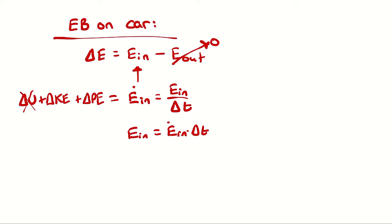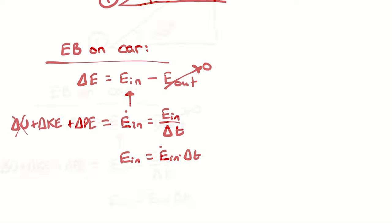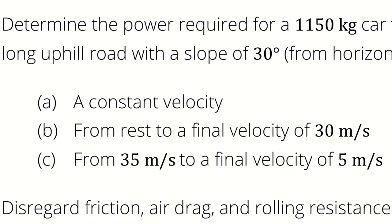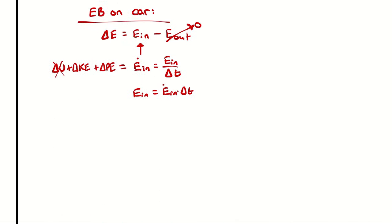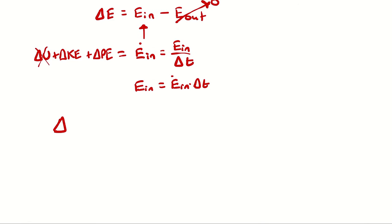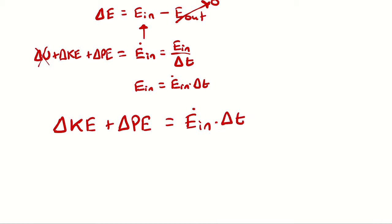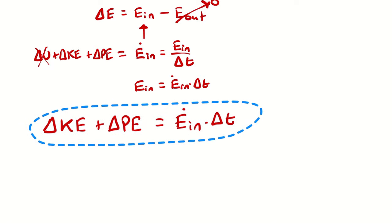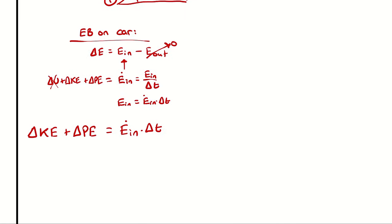Similarly, when we assumed that the change in potential energy was zero in the previous example, we're not saying there is no potential energy — just that the change is zero. That's going to be important for part A, where the change in kinetic energy is zero. It's not that the car isn't moving; it's just that the kinetic energy at the beginning is the same at the end. So we have: delta KE plus delta PE equals E-dot-in times duration.